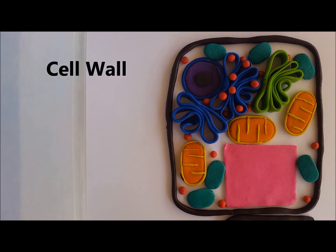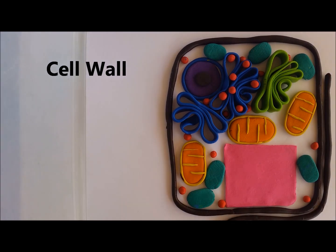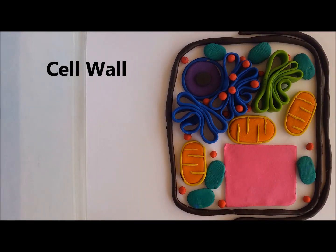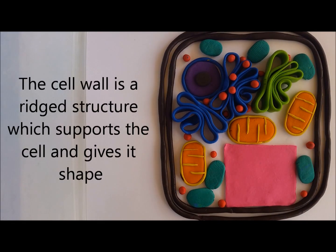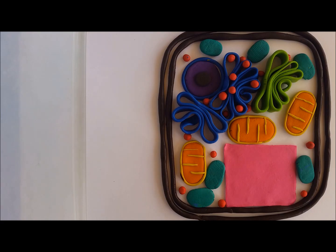Plant cells also have a cell wall. The cell wall is a rigid structure which surrounds the cell membrane and provides support and shape to the cell. You may have noticed that animal cells contain lysosomes but plant cells don't — plant cells very rarely contain lysosomes. If you have any questions about this video, feel free to post them on the blog, otherwise feel free to re-watch this video.